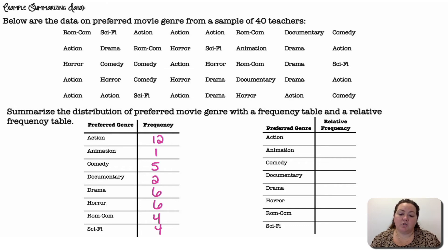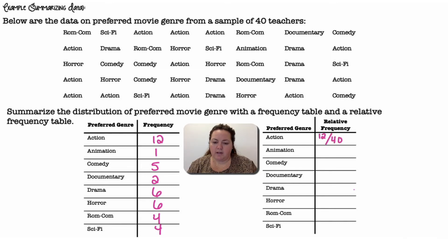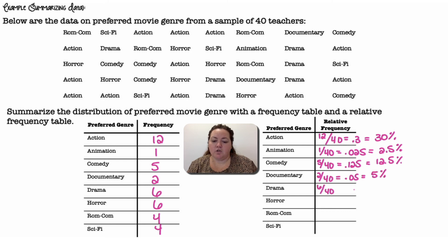And I'm going to go ahead and change that to a relative frequency table. So I need to change these into percentages or proportions. So it was out of 40 total. So I'm going to take for action 12 out of 40, which becomes 0.3, and that would be 30%. Remember, fractions just mean division. 1 out of 40 is 0.025, so 2.5%. Comedy, 5 out of 40, 12 and a half percent. Documentary, 2 out of 40, 5%. Drama, 6 out of 40, 15%. Horror was also 15%. Romcom and sci-fi are both 4 out of 40, which come out to be 10%. So there's our relative frequency table, all in proportions or percentages.